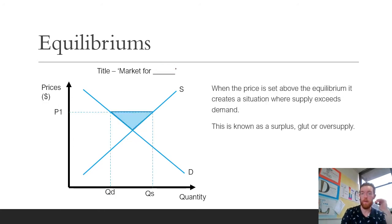When the price is set above the equilibrium it creates a situation where supply exceeds demand. This is known as a surplus, glut or oversupply. You can see when we have our demand equilibrium here, if the price is set higher than the equilibrium, this would be the equilibrium price PE.